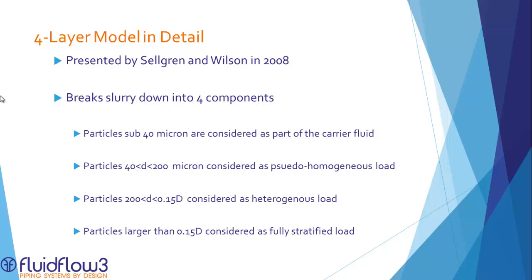The four layer model was presented by Selgren and Wilson in 2008. The model works by breaking the slurry down into four components. Particles sub 40 micron are considered to be part of the carrier fluid. Particles between 40 micron and 200 micron are considered as a pseudo-homogeneous load. Particles between 200 micron and 0.15 times the pipe diameter are considered as heterogeneous load. Particles higher than 0.15 times the diameter are considered fully stratified.